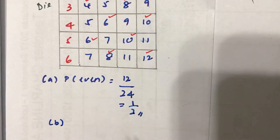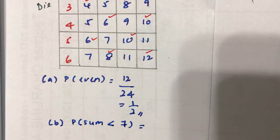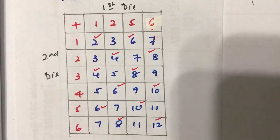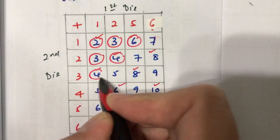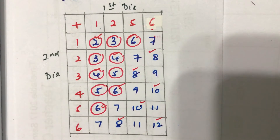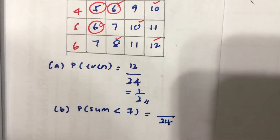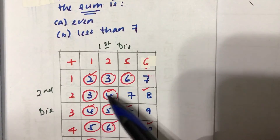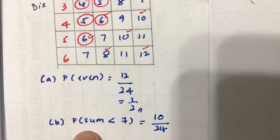Now let's look at the second part. I want to find the probability that the sum is less than 7. We are going to look at the ones where it's less than 7 — I'm going to do a circling this time. Numbers that are less than 7: 2, 3, 6, 3, 4, 4, 5, 5, 6, and 6. These are the numbers that are less than 7. I cannot use 7 itself because it has to be strictly less than that. We have a total of 24 possible outcomes, and there are 10 possible cases where the sum is actually less than 7.